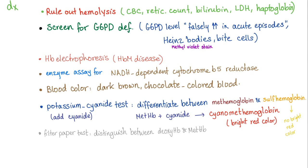Remember, during acute attacks in G6PD deficiency, never measure the G6PD level because it will be falsely elevated. Hemoglobin electrophoresis to rule out hemoglobin M disease, also known as Milwaukee disease. Enzyme assay for NADPH-dependent cytochrome B5 methemoglobin reductase. Blood color is dark brown — described as chocolate-colored blood.